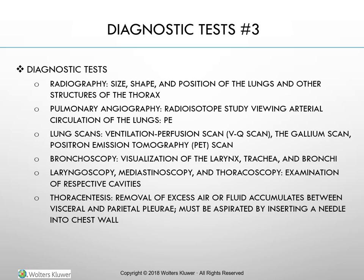Bronchoscopy is very frightening to clients who require thorough explanations. For at least 6 hours before the procedure, the client must abstain from food or drink to decrease aspiration risk — local anesthesia suppresses the swallow, cough, and gag reflexes. Medications given include atropine to dry secretions and a sedative or narcotic to depress the vagus nerve, which if stimulated may cause hypotension, bradycardia, or arrhythmias. Other potential complications include bronchospasm, laryngospasm, hypoxemia, bleeding, perforation, aspiration, cardiac arrhythmias, and infection.